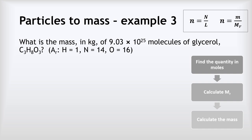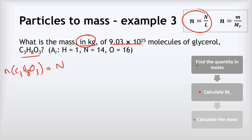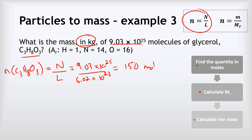Last example: what is the mass in kilograms of 9.03 times 10 to the 25 molecules of glycerol, C₃H₈O₃? We follow the same approach: find quantity in moles, calculate MR, then calculate the mass, remembering to convert grams to kilograms at the end. The number of moles of C₃H₈O₃ equals 9.03 times 10²⁵ divided by 6.02 times 10²³, giving 150 moles of glycerol.